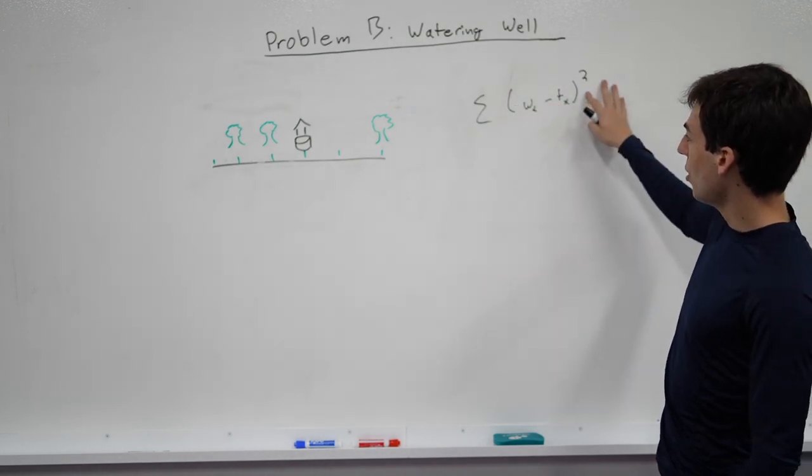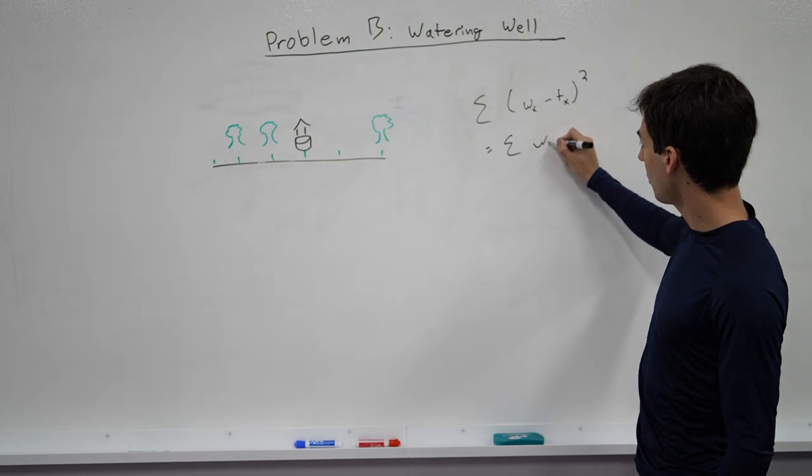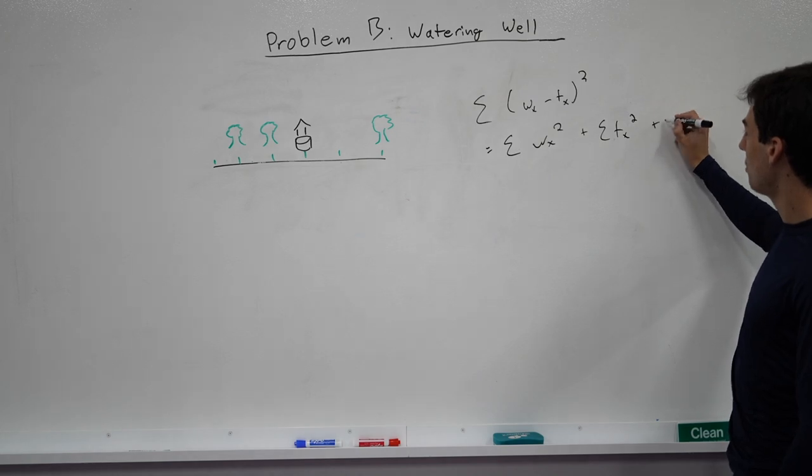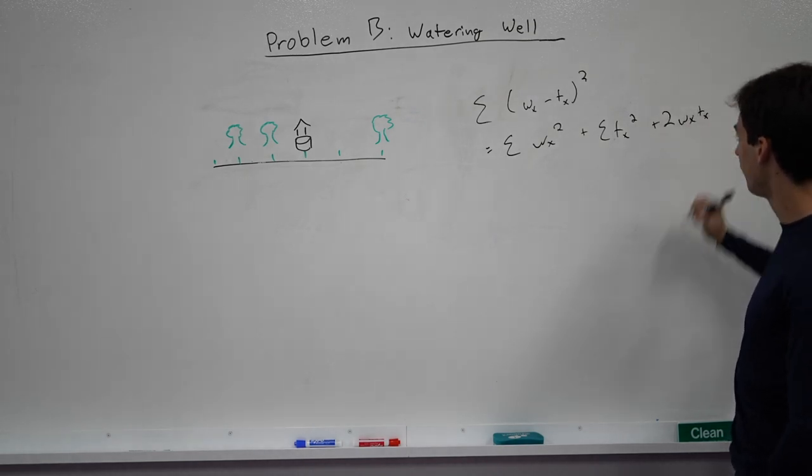And if we elaborate on this formula, this is equal to the sum of the well x squared plus the sum of the tree x squared minus two times the well x times the tree x.